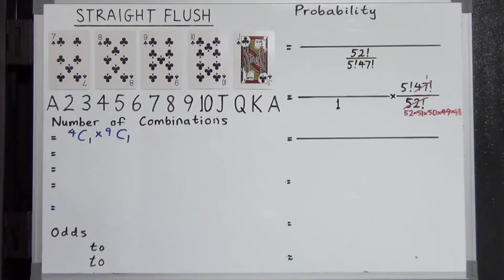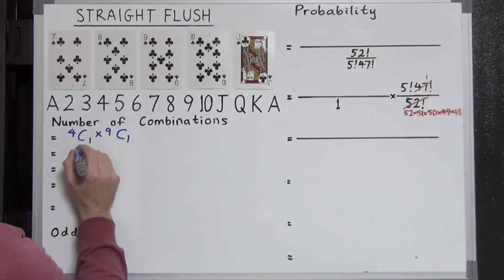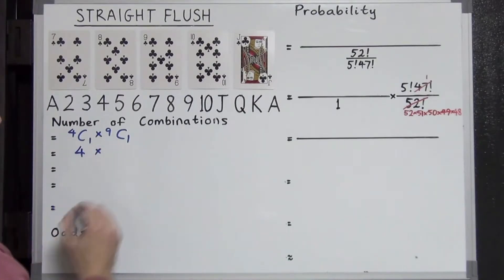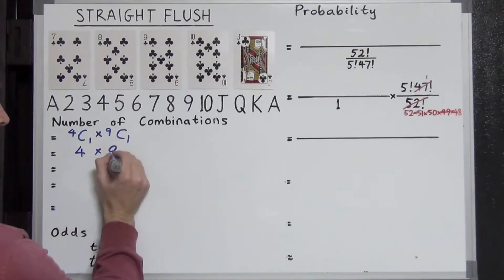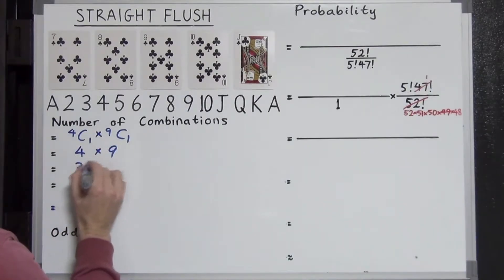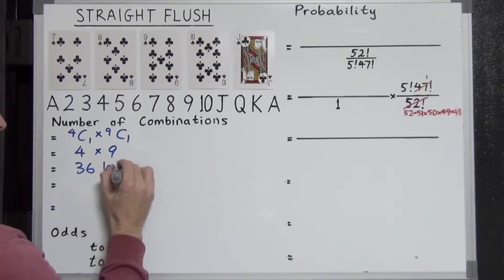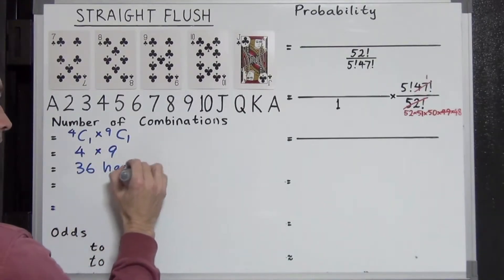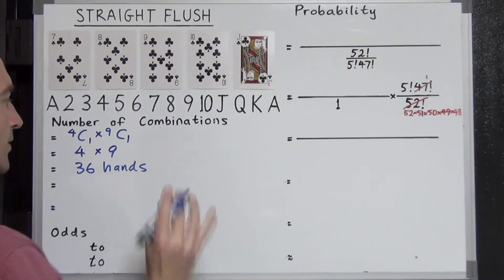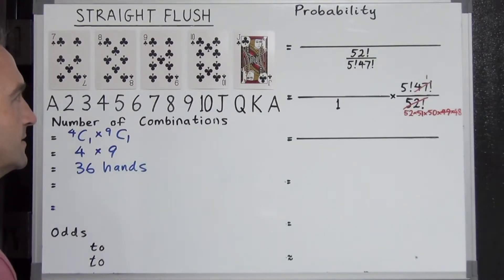Evaluating this: 4C1 is 4, and 9C1 is 9, giving us 36 hands total.